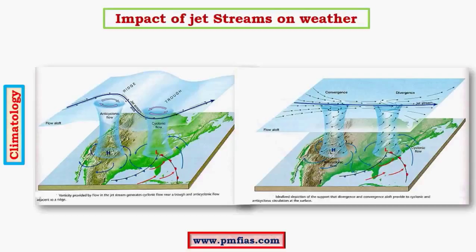Jet streams change their meandering shape frequently — sometimes in just a few days. The low pressure system moves along with the trough region of the jet stream. As the trough region shifts position, the low pressure system moves with it. This is how jet streams influence the movement of temperate cyclones.